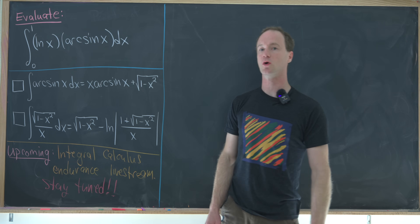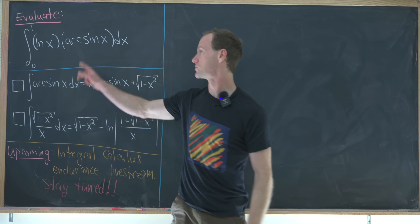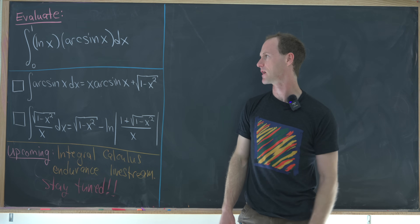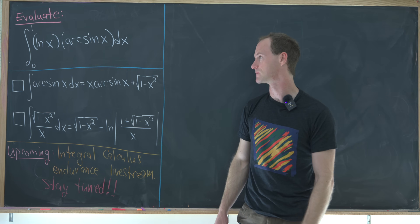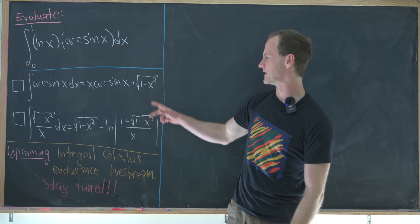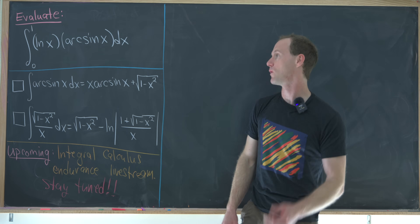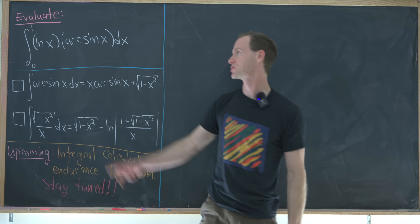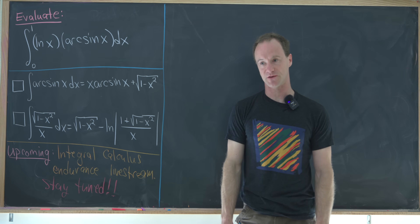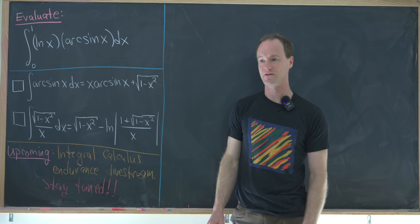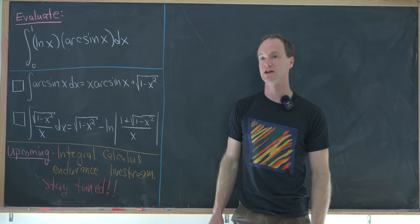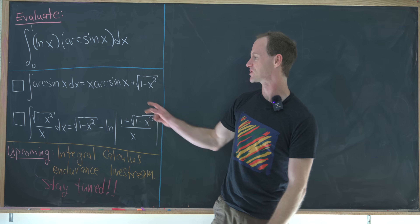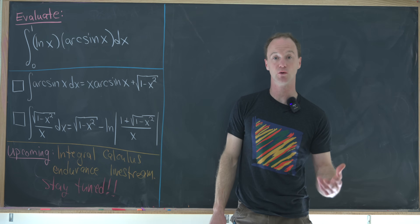So let's look at our goal. We want to evaluate the integral from zero to one of the natural log of x times arc sine of x — and by arc sine I mean the inverse of the sine function. Here we have an inverse function: natural log is the inverse of the exponential function, times another inverse function. Generally, when we have integrals involving inverse functions, you want to use integration by parts. That's exactly what we're going to do.